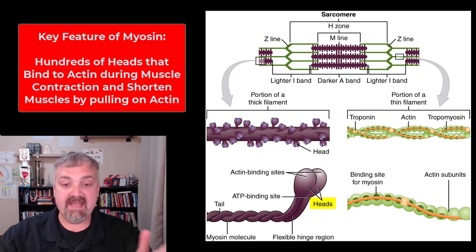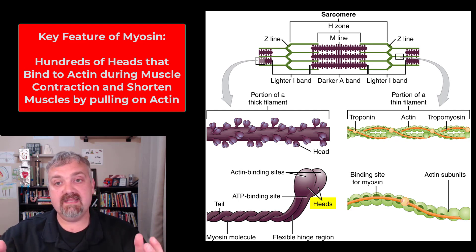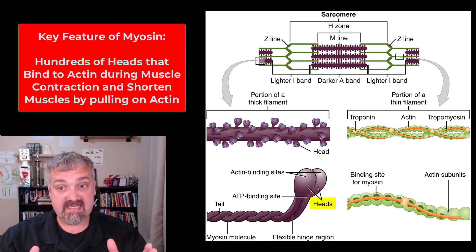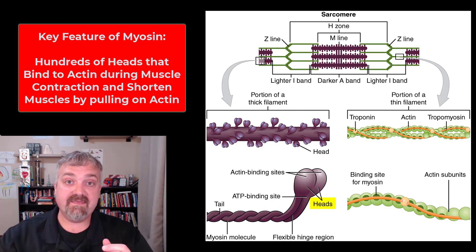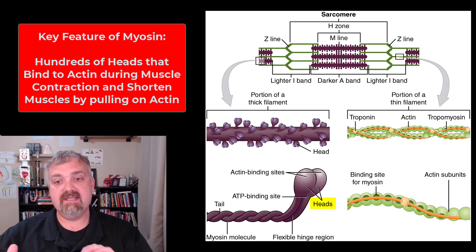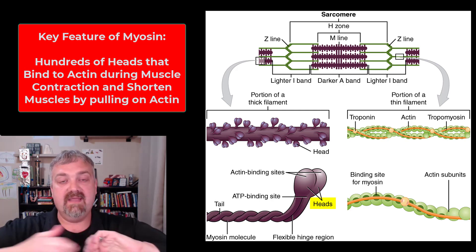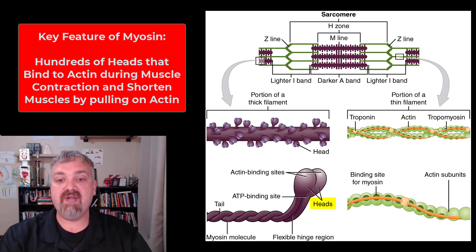On the myosin side, the main thing are those heads. A single thick filament will have hundreds of these heads, and when they're in the presence of ATP and calcium has moved the shielding proteins out of the way, the job of these heads is to grab onto actin and pull it. That pulling is how our muscles contract.